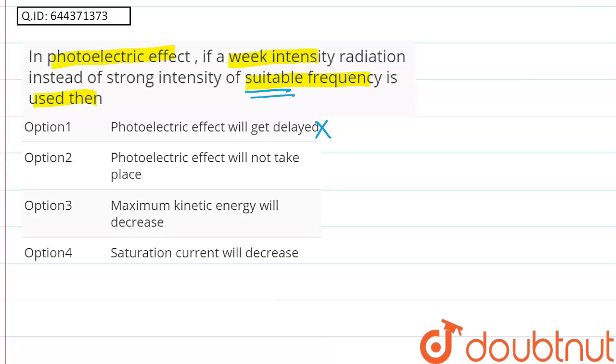Option two, the photoelectric effect will not take place. This statement is also wrong because the frequency is suitable. That means the energy of incident rays is greater than the work function of the metal, so the photoelectric effect is going to take place.